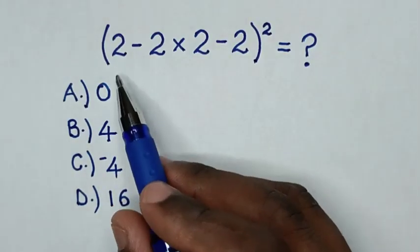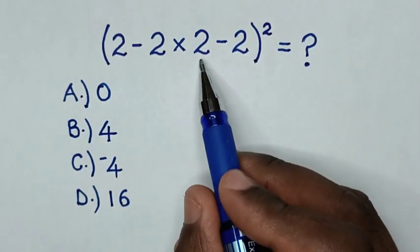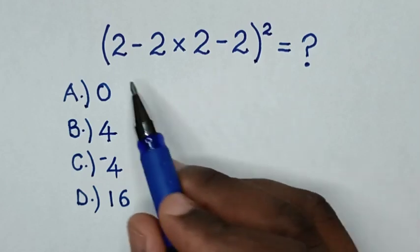Hello! How to solve (2 - 2 × 2 - 2)² equals question mark. We have brackets square.